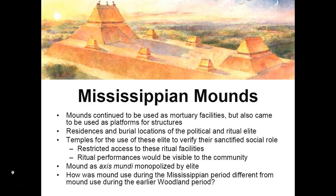The use of mounds in the earlier woodland period brought the entire community together as equals, whereas during the Mississippian period they are used to elevate — literally elevate — a small segment of the community over the others.